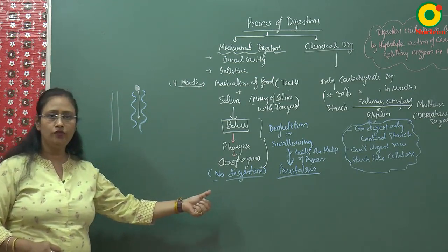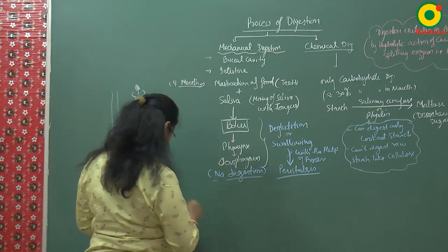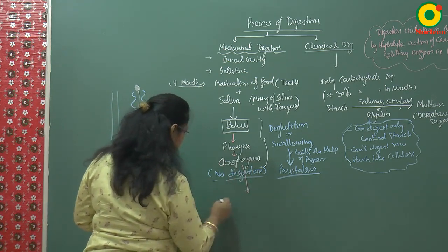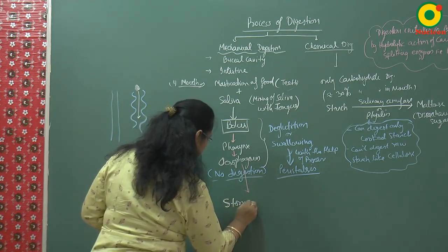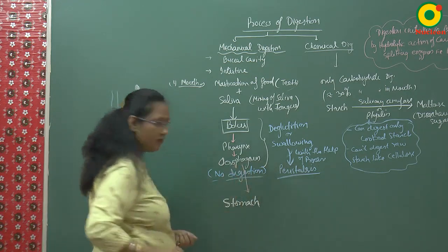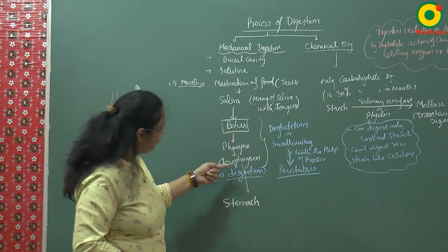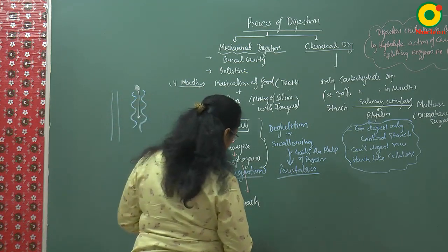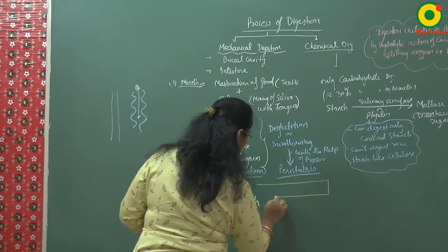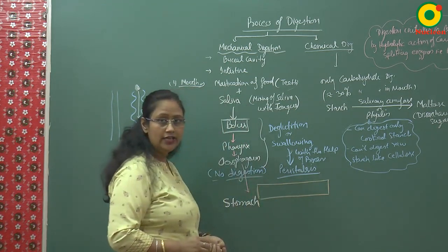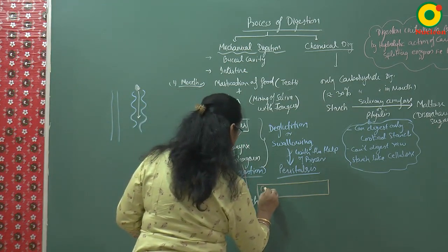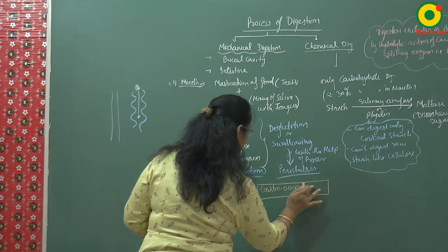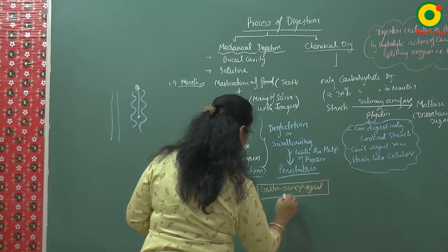Now the food from the esophagus will enter into the stomach. This entry of food from the esophagus to the stomach is guarded by a sphincter — that is the gastro-esophageal sphincter.